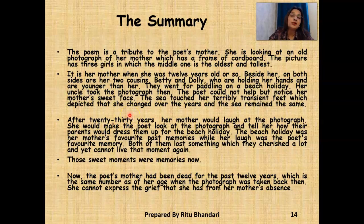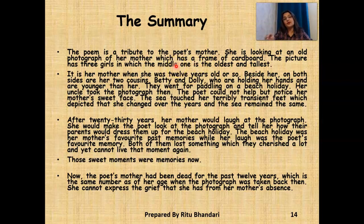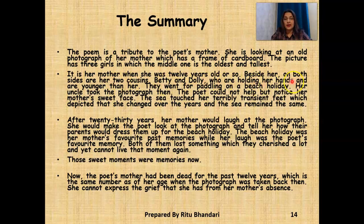Let's look at the summary. The poem is a tribute to the poet's mother. She is looking at an old photograph of her mother which has a frame on the frame of a cardboard. The picture has three girls in which the middle one is the oldest and tallest and she happens to be the poet's mother. It is her mother when she was 12 years old or so, and beside her are her two young cousins, Betty and Dolly, who are holding her hands and are younger than her.